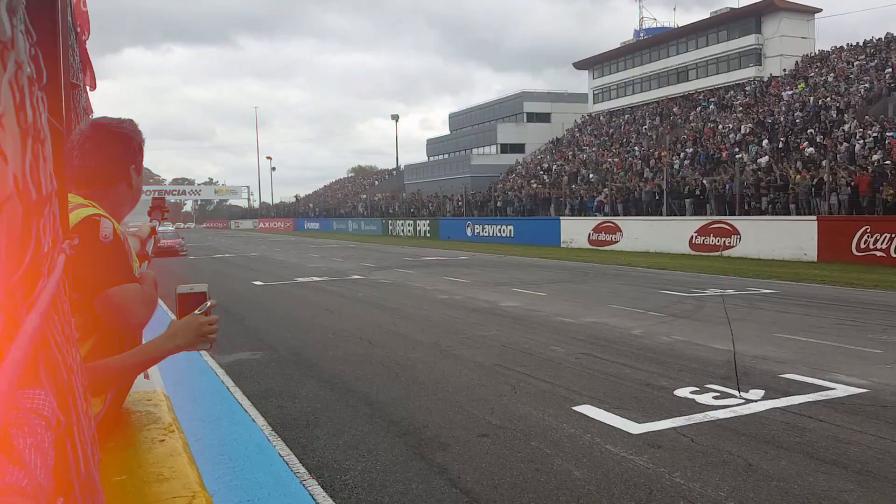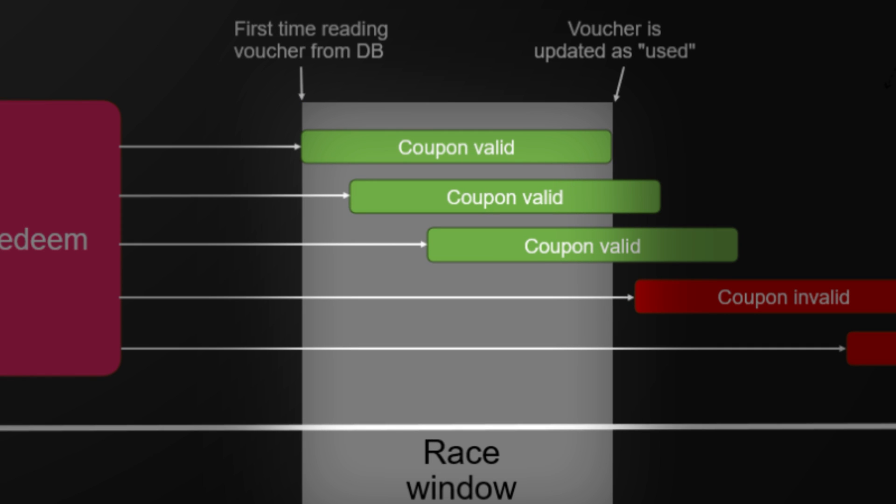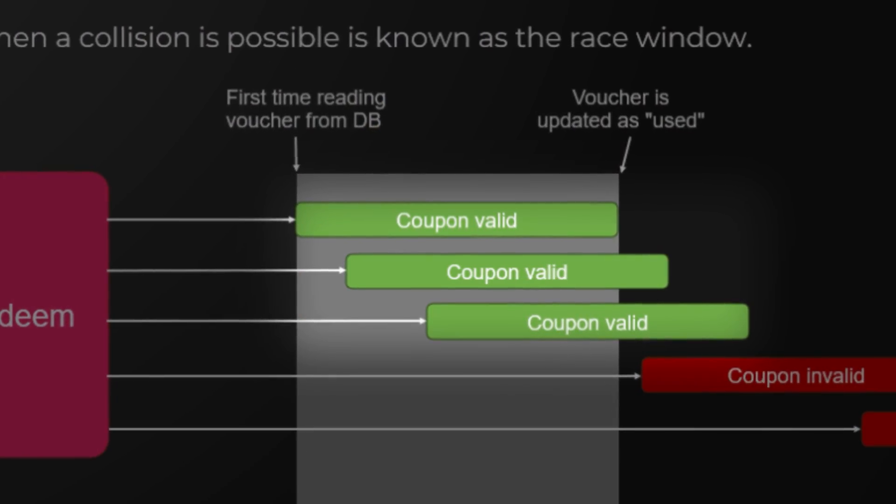Before we jump into a lab, let's briefly discuss an example so that we can understand what's happening and also talk about the race window and collisions. Here we have an example of a voucher being applied, where the limitation is that you can only use each voucher once. But there is a very small window of time between when the voucher is being checked to be valid and when it is updated as used or applied. If you're familiar with time-of-check time-of-use, it's essentially the same thing. We want to apply the voucher as many times as possible during this race window and overrun the limits of one-time use — hence the name 'limits overrun.'